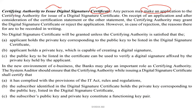Any person may make an application to the certifying authority for issue of a digital signature certificate — like all Aadhaar cards are also digitally certified. On receipt of an application and after consideration of the certification statement or other statements, the certifying authority may generate the digital signature certificate or reject the application. It will depend upon them. However, in case of rejection, the reasons are to be recorded in writing.